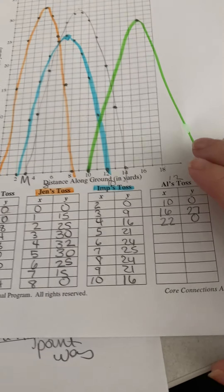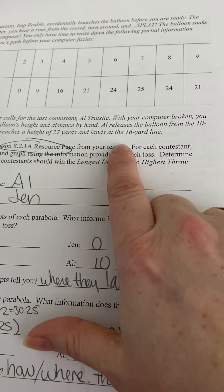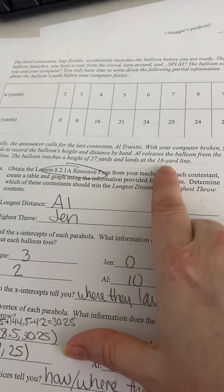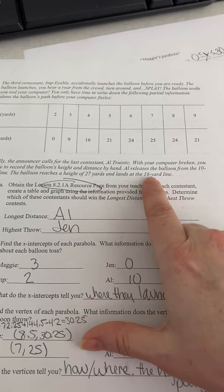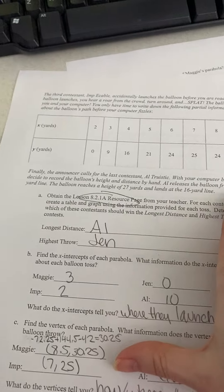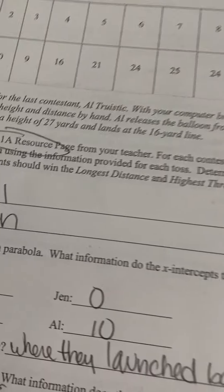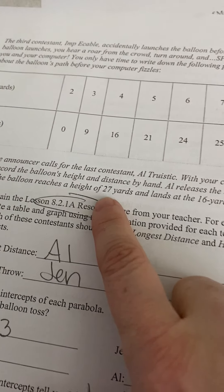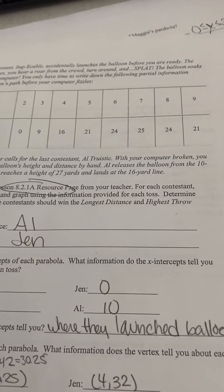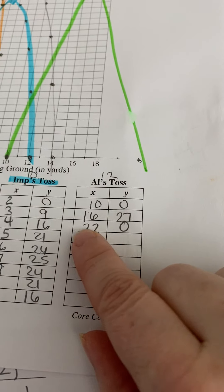They get you there. And then Al, you didn't get a lot of information. He started at the 10-yard line. So, that's why I used 10. He was at 0. It reached the height of 27 yards. And so, I knew that was going to be 27. And then I knew when it got back to 22.